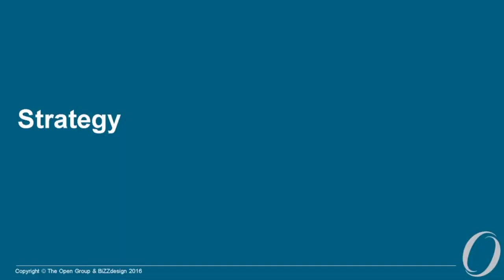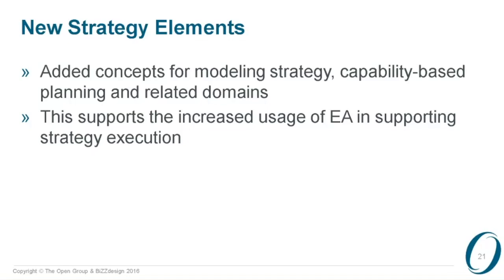We have added a set of concepts called strategy elements. Those are aimed at things like capability-based planning and modeling other strategic areas of the organization. This is really intended to support the linkage between enterprise architecture and strategy. Some people might argue this is not real architecture and might not have a place in an enterprise architecture language, but I think we shouldn't be too strict about those boundaries — we do need to link our discipline to other disciplines and have the right concepts for that.